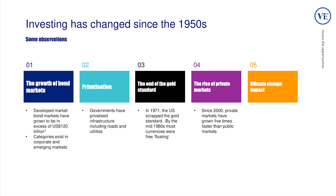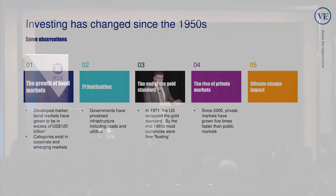Just some observations since the 1950s: in bond markets, at the time it was all about US debt, but now the corporate bond market is enormous. Emerging market bonds are an enormous asset class, both in terms of what debt emerging market countries raise in US dollars but also in their own currencies. There's been a big trend towards privatisation — governments privatising infrastructure — and the end of the gold standard in the 1970s has had a profound effect. Private market assets and the impact of climate change are also now key considerations.